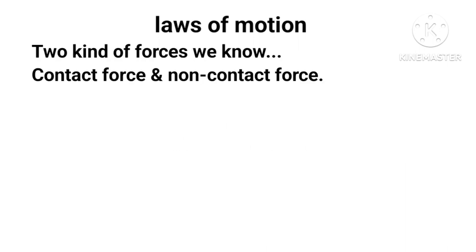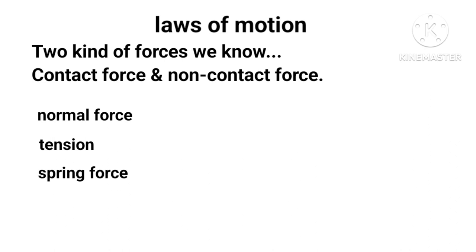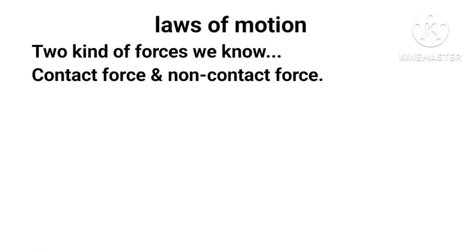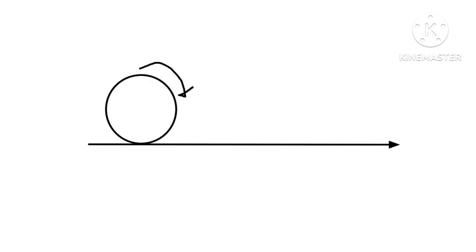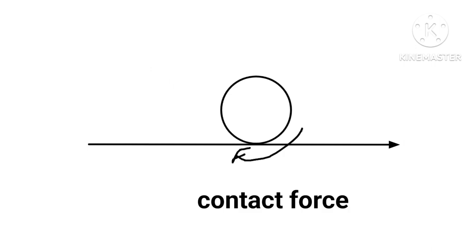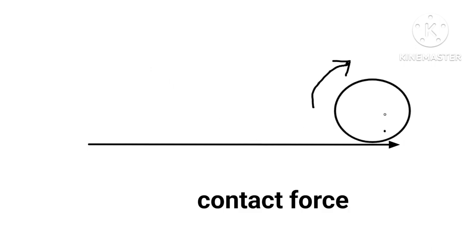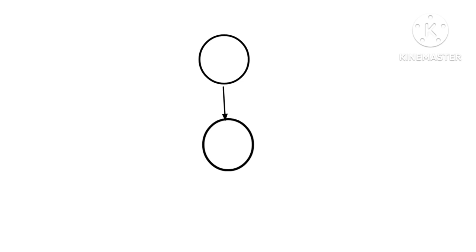We know two kinds of forces: contact force and non-contact force. For example, normal force, tension, spring force, and frictional force are contact forces. Gravitational force, electromagnetic force, and magnetic forces are non-contact forces. For example, a body rolling down the ground in contact is due to frictional force, but when dropped down to the ground it is due to a gravitational field.